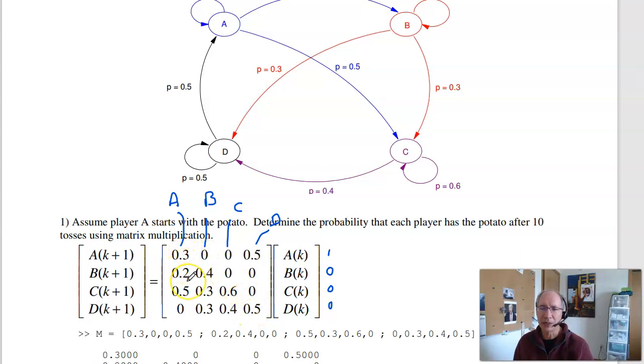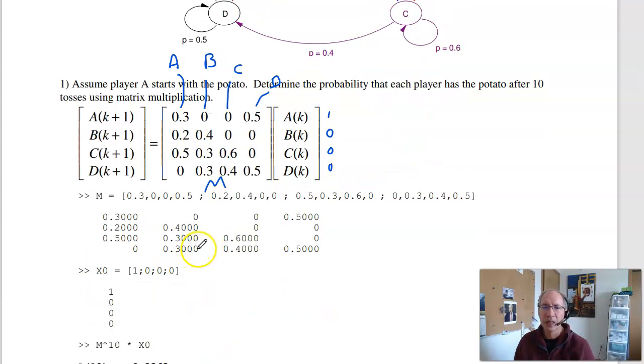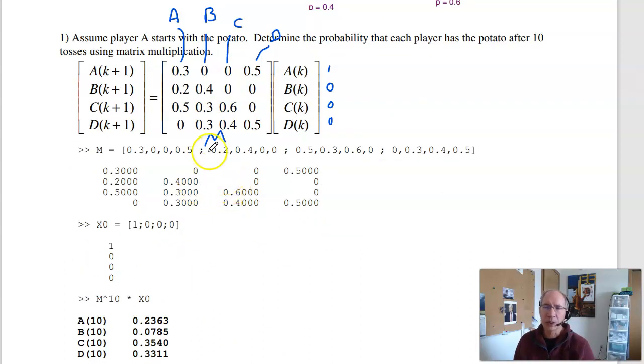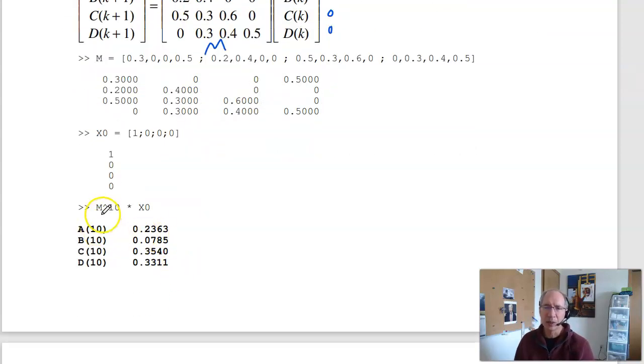If I have it at 0 tosses, x0, I know where it is at 1 toss. Multiply by this matrix, I have where it is at 2 tosses. So let's call that matrix M. Then I can find out where you are after 1 toss by multiplying by M, 2 tosses multiply by M squared, 3 tosses M cubed, 10 tosses multiply by M to the 10th. So this is where the hot potato is after 10 tosses. A has it with a 23% probability, B has it with 7% probability, and so on. So that's one way to solve a Markov chain matrix multiplication.